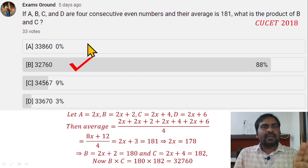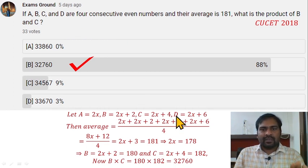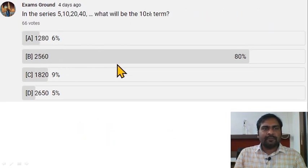For the average, add these numbers, divide by 4. It is going to be 2x + 3, given as 181. Then 2x + 3 = 181. From here, 2x = 178. Now find out the multiplication of B and C: multiply it, so it is 180 × 182. The multiplication is 32,760. Option B is correct here.